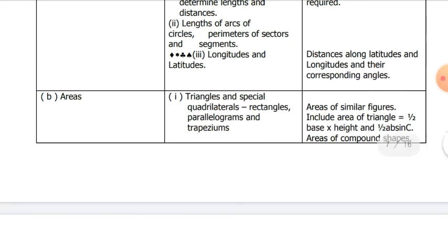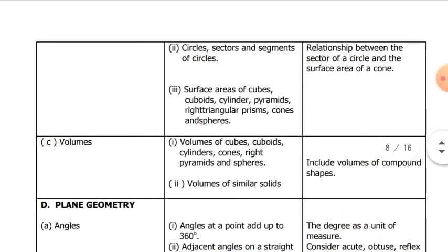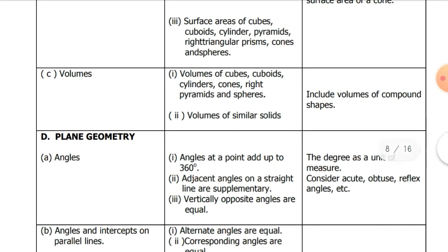Then focus on areas: areas of triangles, special quadrilaterals which has to do with rectangles, parallelograms and trapeziums, circles, sectors and segments of circles. Then surface areas of cubes, cuboids, cylinders, pyramids, right triangular prism, cones and spheres. Volumes: volumes of cubes, what I'm telling you are the things that will come out—cuboids, cylinders, cones, right pyramids and spheres.